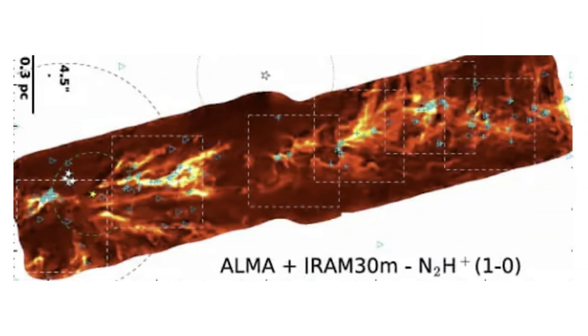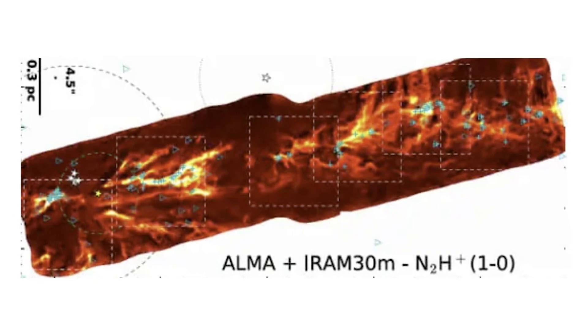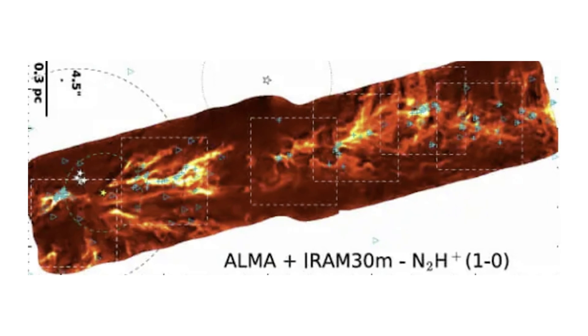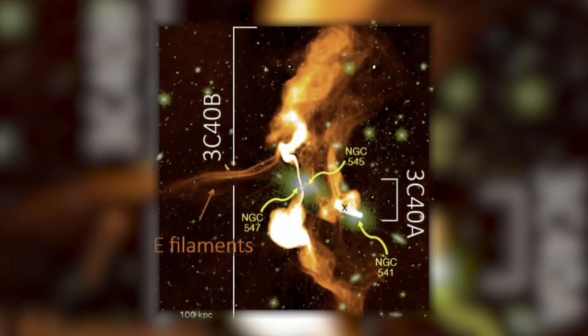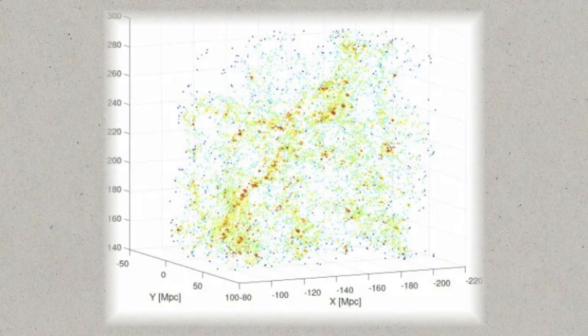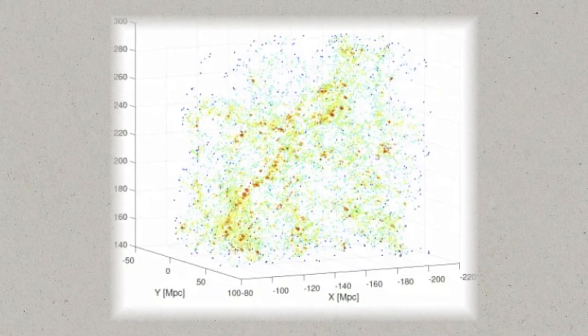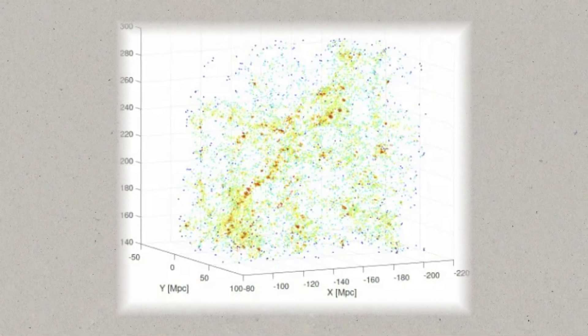First of all, as we said in the first episode of this series, we see these filaments at all scales in the universe. We see them in our laboratory devices at the scale of centimeters. We see them on the scale of light years in the clouds that form stars like our own sun. We see them on million light-year scales in filaments that form galaxies like the Milky Way. And we even see them on scales of hundreds of millions of light years, where clusters of galaxies are strung like beads on a string along these huge filaments.